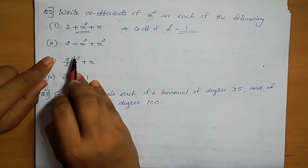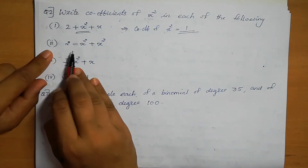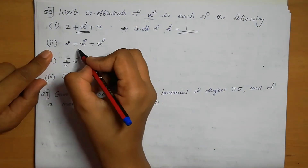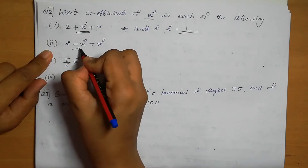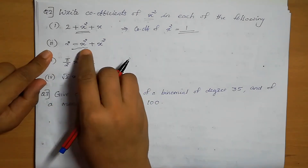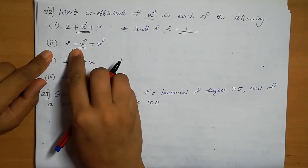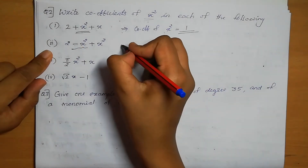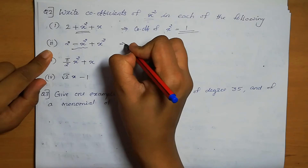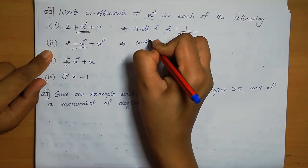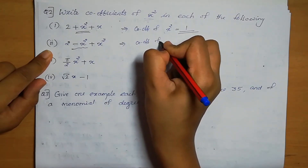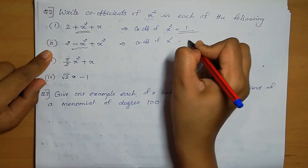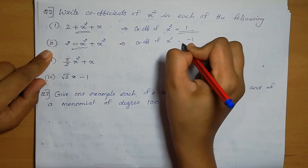Question number 2: 2 minus x squared plus x cubed. The x squared term has a minus sign, so the coefficient of x squared is minus 1.